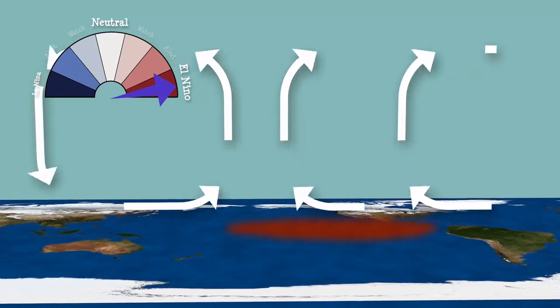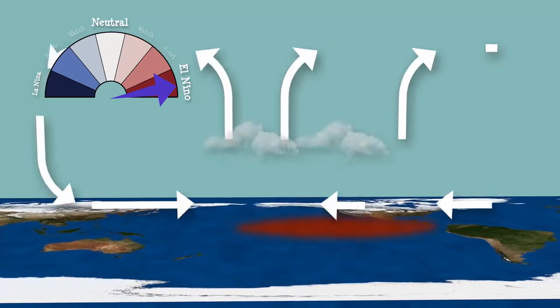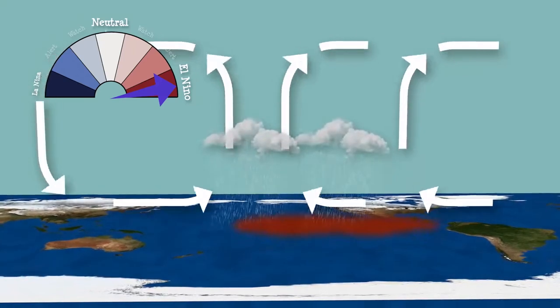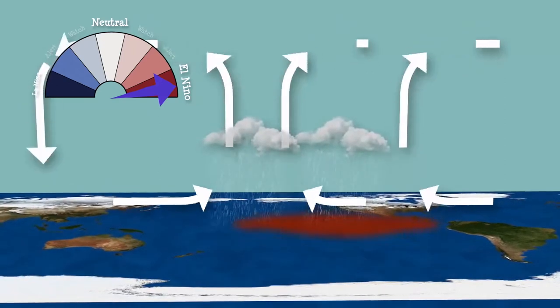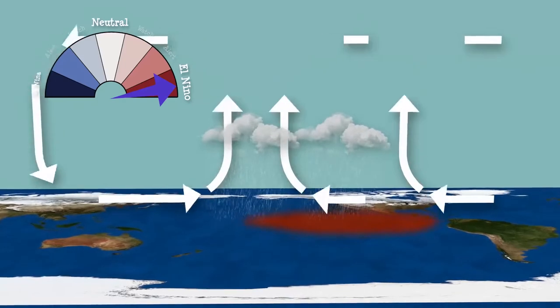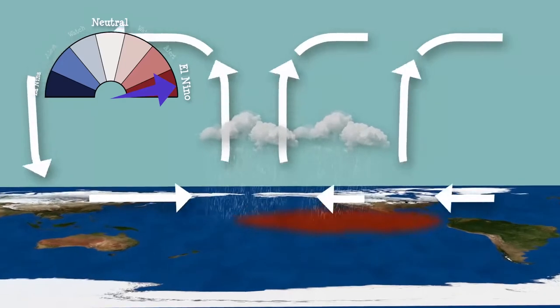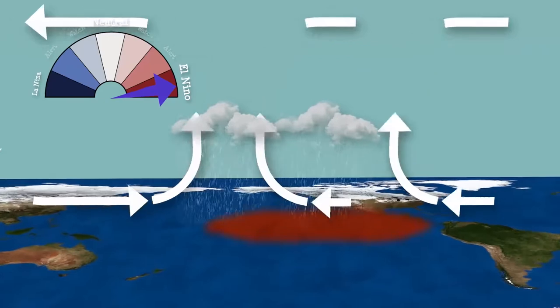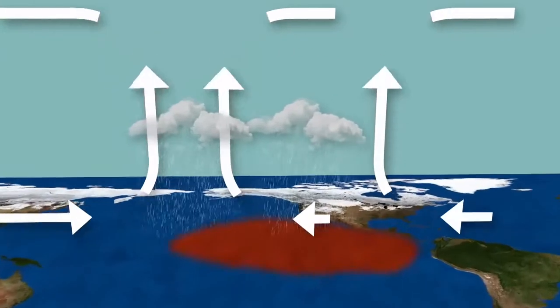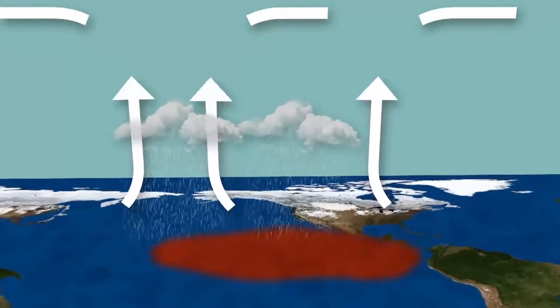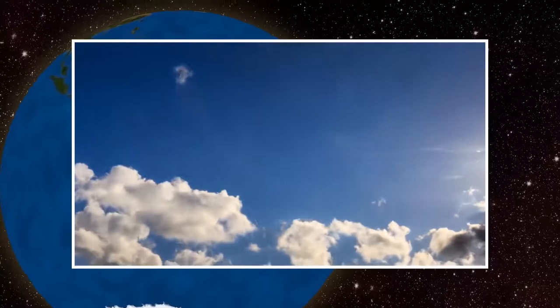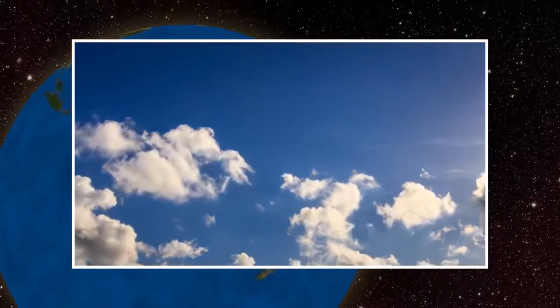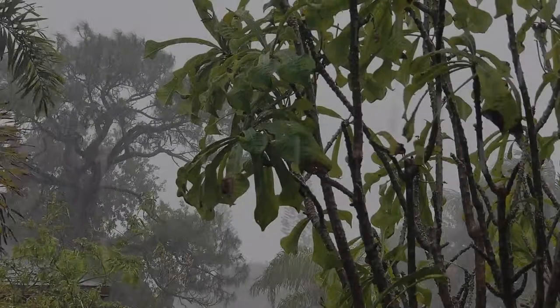We know that during El Niño years, rainfall develops between September and November. When it's the opposite — the cool phase of ENSO, La Niña — the sea surface temperature in the eastern Pacific is below average, air pressure is high in the eastern Pacific and low in the western Pacific.